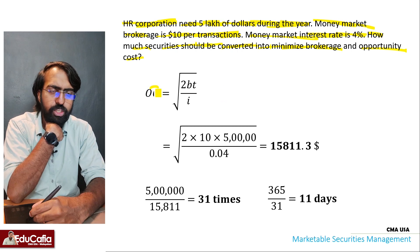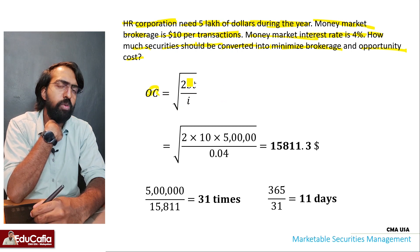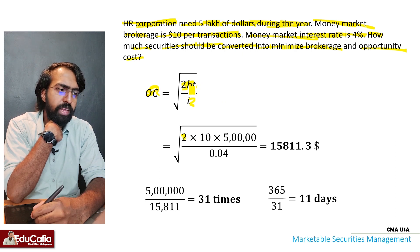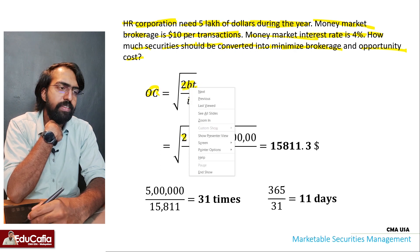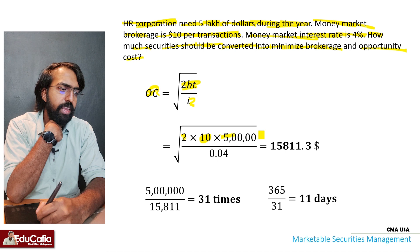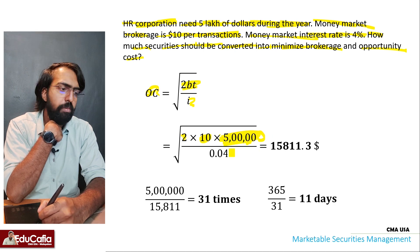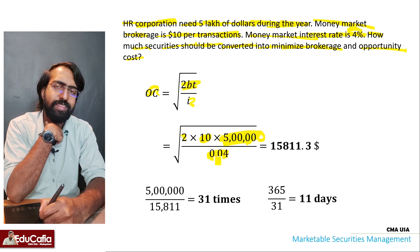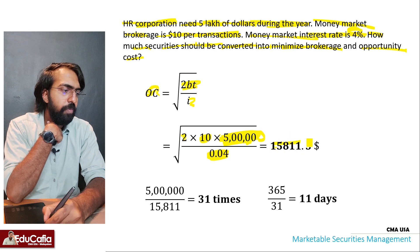Applying the Baumol formula: OC = √(2BT / i). Substituting values: 2 × B (transaction cost) × T (demand = 5 lakh) divided by i (interest rate = 0.04). This gives the optimum conversion amount.